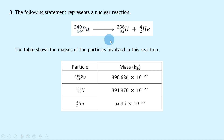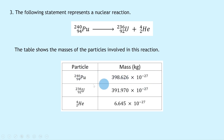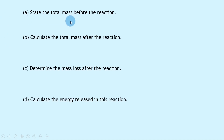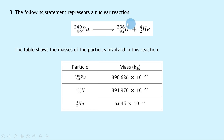Question 3: the following statement represents a nuclear reaction — Plutonium-240 decaying into Uranium-236 plus an alpha particle (a helium nucleus). The table shows the masses of the particles involved: the plutonium particle is 398.626×10⁻²⁷ kg, the uranium particle is 391.970×10⁻²⁷ kg, and the alpha particle is 6.645×10⁻²⁷ kg.